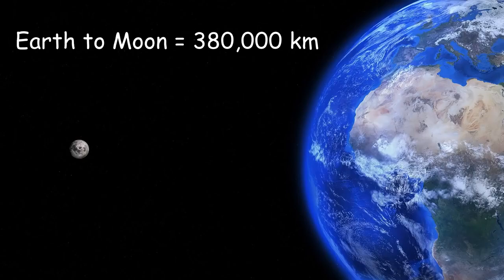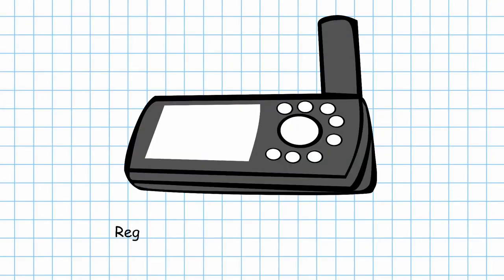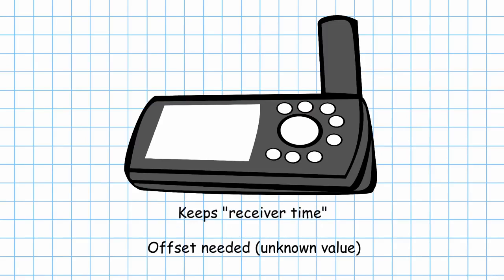GPS receivers, however, do not have built-in atomic clocks. They've only got normal clocks, which are nowhere near as accurate as is needed. What this means is that instead of knowing the precise time, as is kept by the satellites, they have their estimated time, based on their own clock. To turn this into the same precise time that the satellites use, they need to apply an unknown offset.